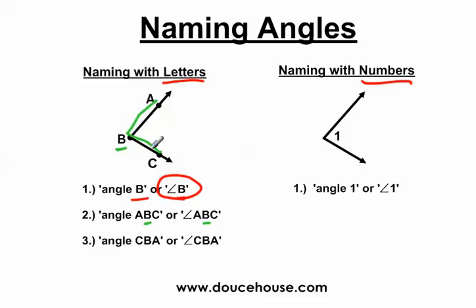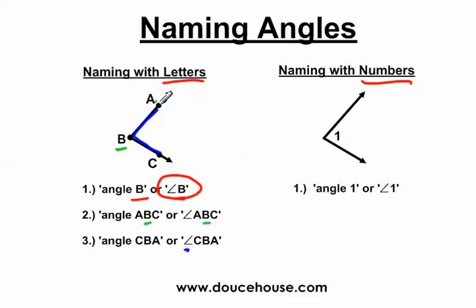When you trace your finger over the three points that create the angle, it spells out the angle name. That's how we get angle ABC, or using the symbol, angle ABC. We don't have to go in alphabetical order — we could go from C to B to A. So we can also call this angle CBA. With three points that help create an angle, we have three different ways to name it: just the vertex, or tracing the three points in either direction.